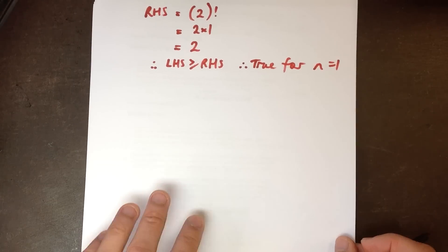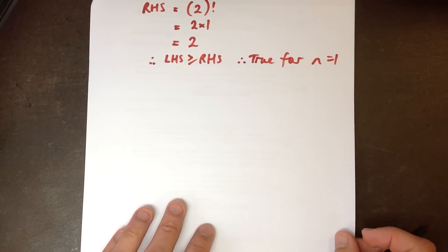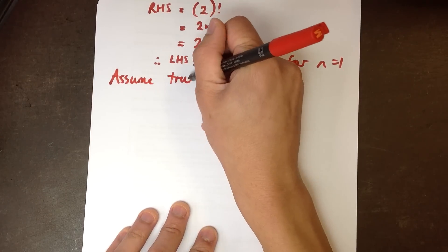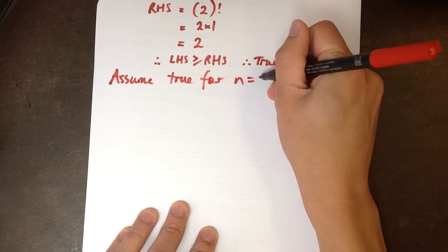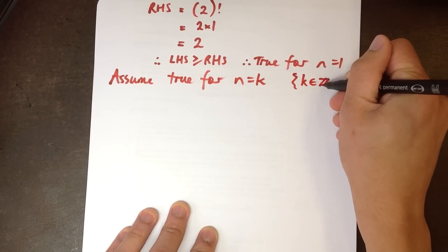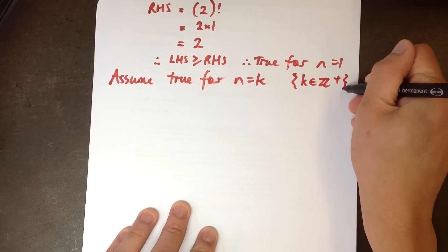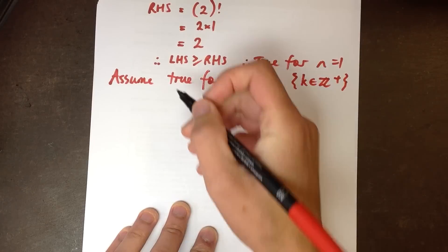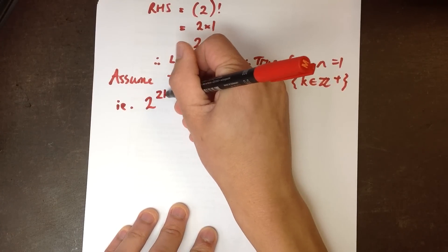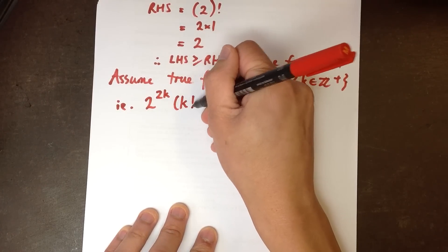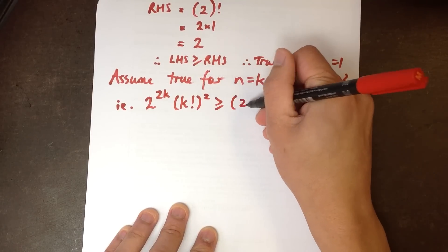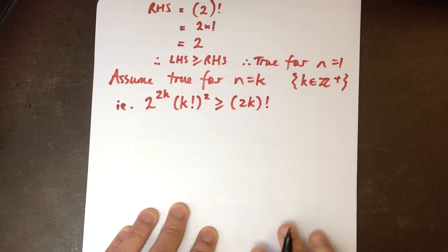The next step in a mathematical induction proof is to assume that the statement is true for some arbitrary value k, where k has to follow the same rules that n follows, so it's a positive integer as well. I'm just going to replace all my n's with k's, and there's my assumption.